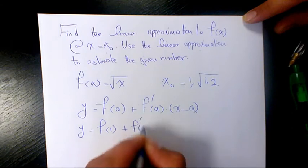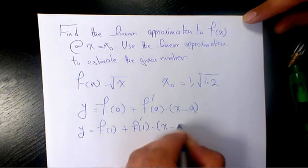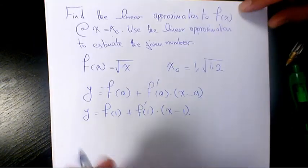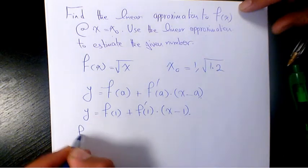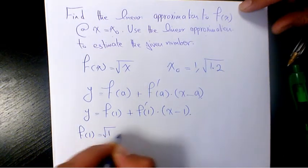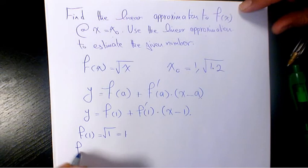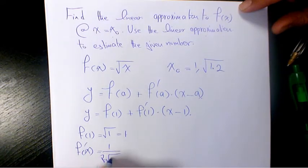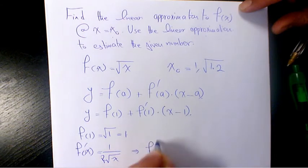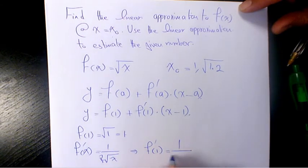f of one is going to be square root of one, that's going to be one. And f prime x is one over two root x, which f prime one is going to be one over two root one, which is going to be one over two.